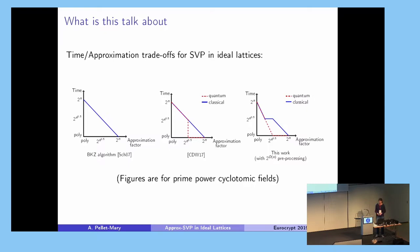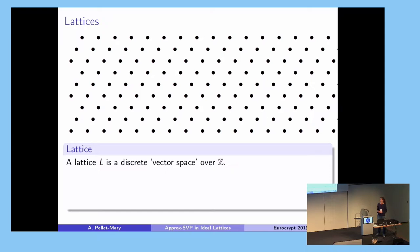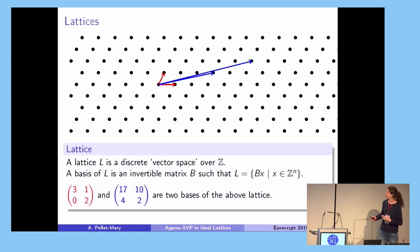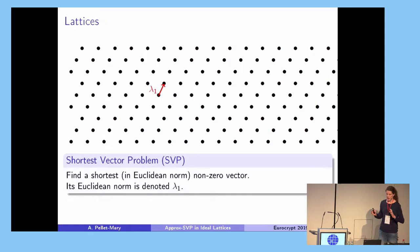A lattice is a discrete vector space over Z, represented by a basis. Here is a lattice in dimension two, and the points of the lattice are integer linear combinations of the vectors of the basis — you have an example of a lattice with two different bases. SVP stands for shortest vector problem: given a basis of a lattice, find a shortest non-zero vector of the lattice. I'll write λ₁ for the Euclidean norm of a shortest vector.